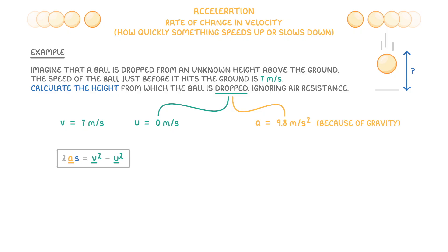So we now have v, u, and a. To find the distance though, which is s, we're going to have to rearrange by dividing both sides by 2a. Then all we have to do is plug in our values. So 7 squared minus 0 squared divided by 2 times 9.8, which gives us 49 divided by 19.6, which is 2.5. So the ball must have been dropped from 2.5 meters above the ground.